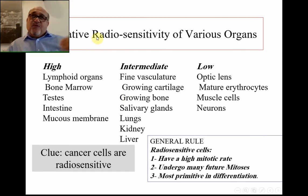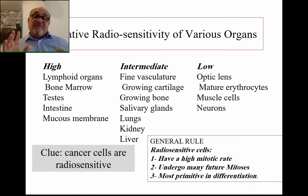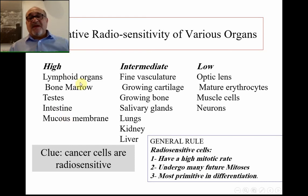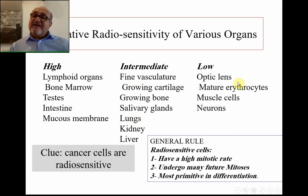Regarding the relative radio sensitivity of various organs: highly radio-sensitive tissues — those most affected by radiation — include lymphoid organs, bone marrow, testes, intestine, and mucous membranes. Tissues of intermediate sensitivity include fine vasculature, growing cartilage, growing bone, salivary glands, lungs, kidney, and the liver.